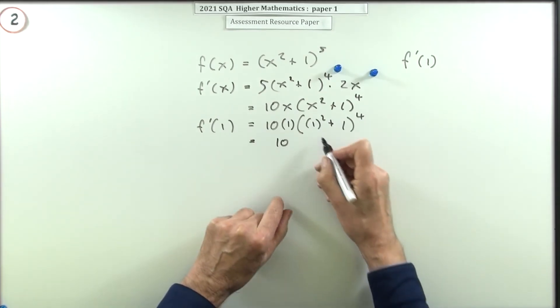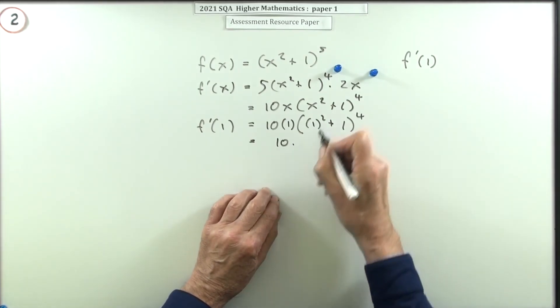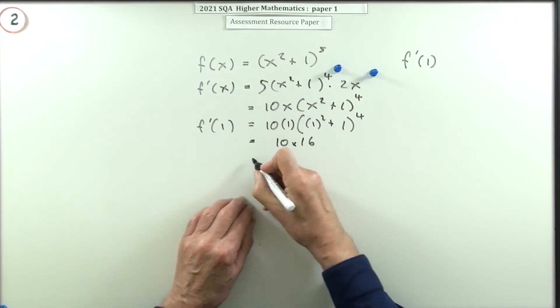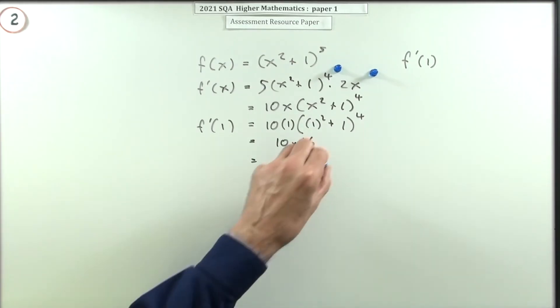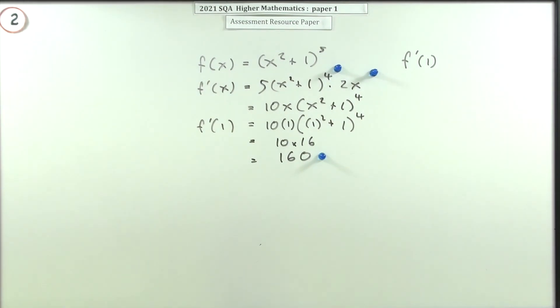I knew that'd come in handy—one and one is two. Two to the four is 16, so it's 10 times 16, which is 160 for the last mark.